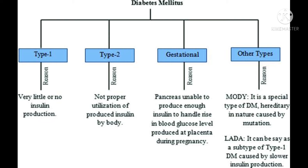Gestational diabetes is caused by pregnancy — the amount of glucose rises in the body during that period. It is not as serious as Type 1. Other types of diabetes are due to heredity or family history, making them an inherited disease, and other types are also serious. Thank you — if you like my videos, please like and subscribe to my channel.